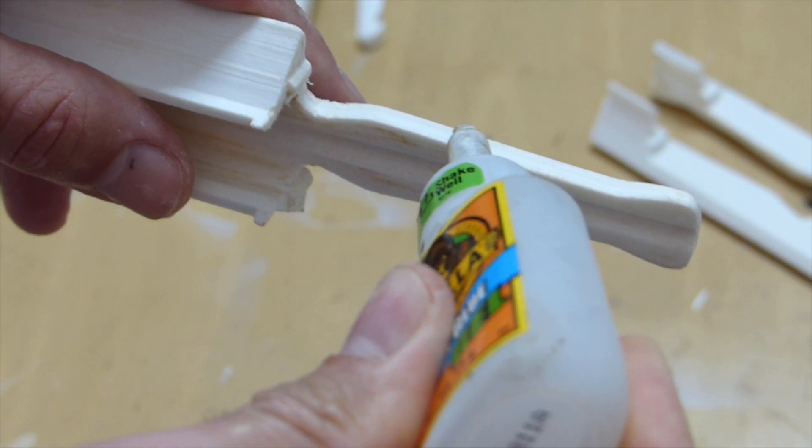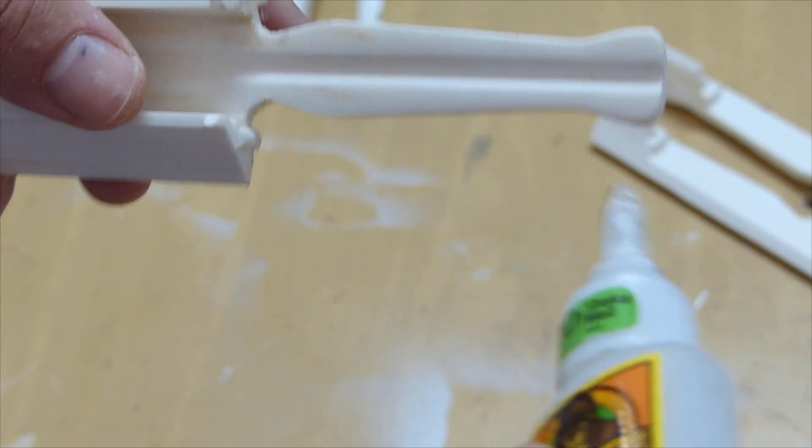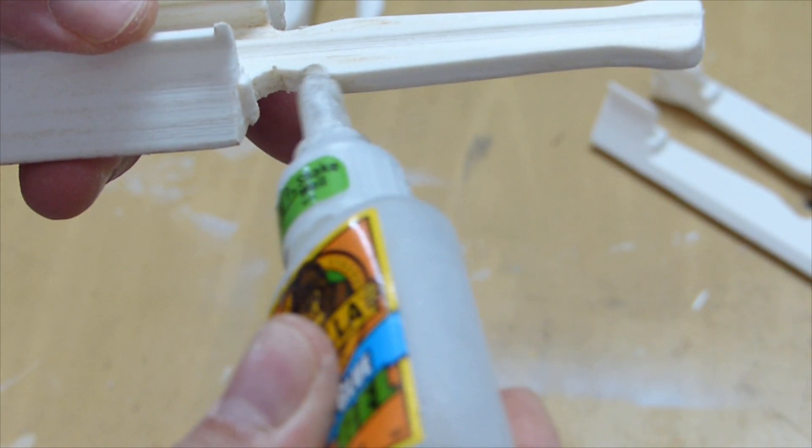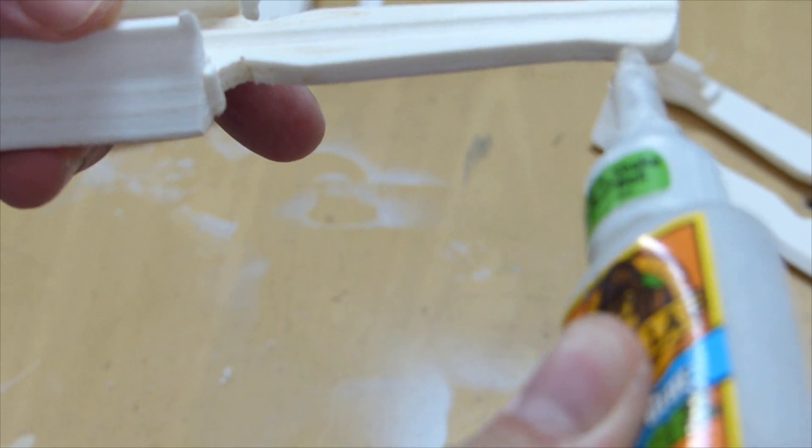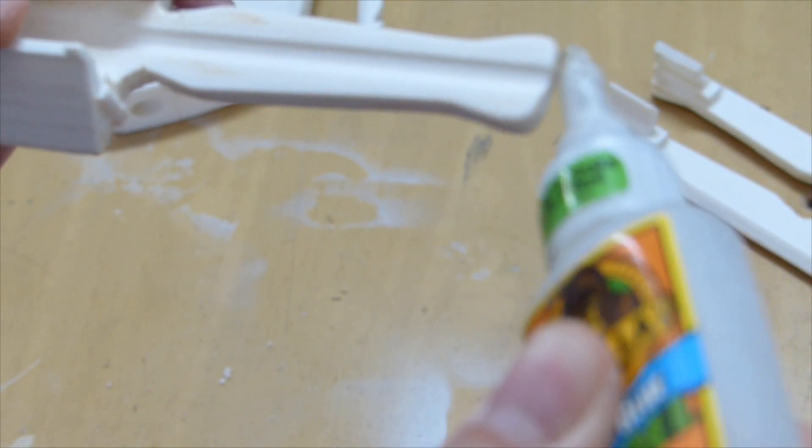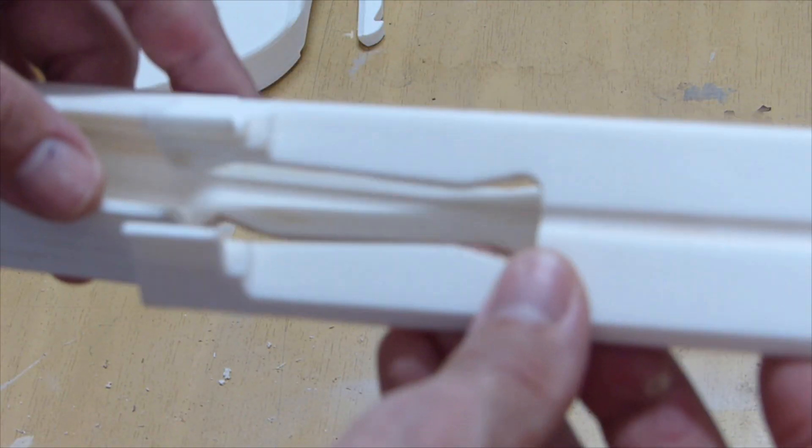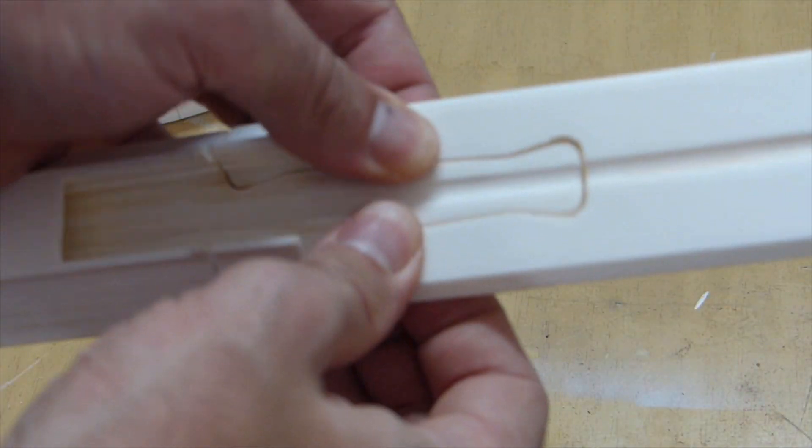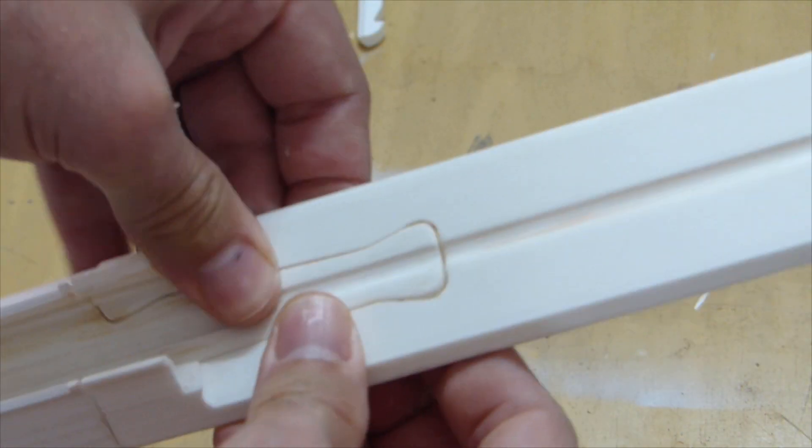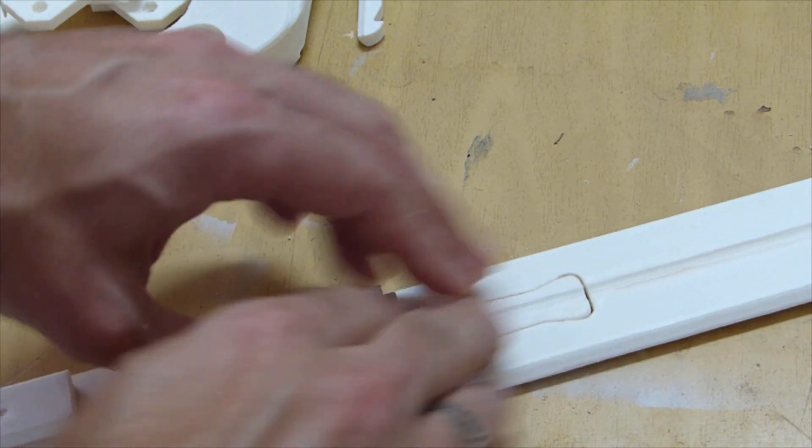Once satisfied with the fit and alignment of these parts, I applied Gorilla Gel Glue, although a 2 part epoxy can be used as well but will take longer to dry. The parts are then fitted together permanently and I made sure that they were level and that the channel in the center was flush.